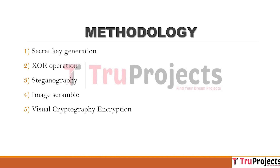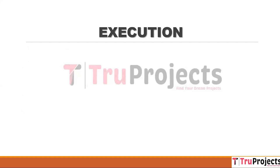The fifth module is visual cryptography encryption, where images are split into two shares and sent to the receiver. The receiver performs reverse operations to decode the message from the image. Reverse operations include merging shares, unscrambling the image, extracting the image, decrypting the message, and applying reverse XOR to get the original message. For execution, first open the code folder.